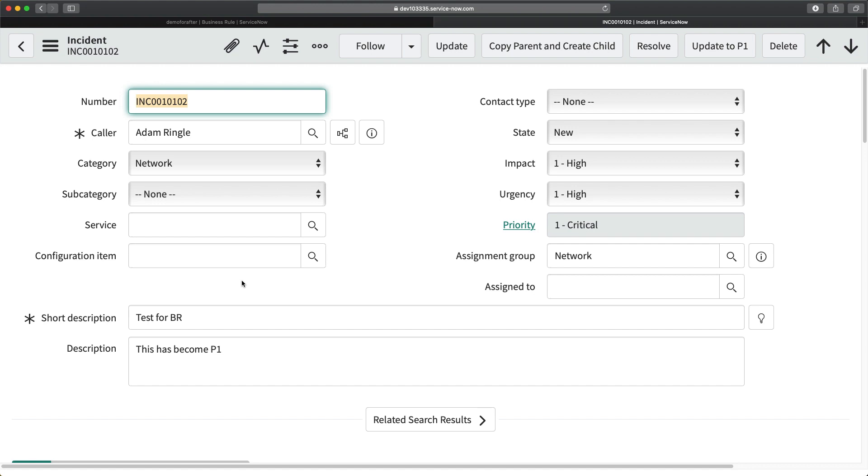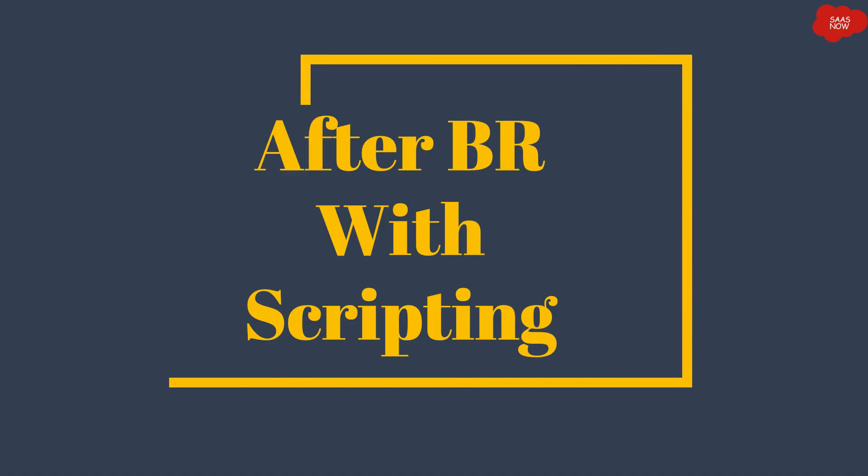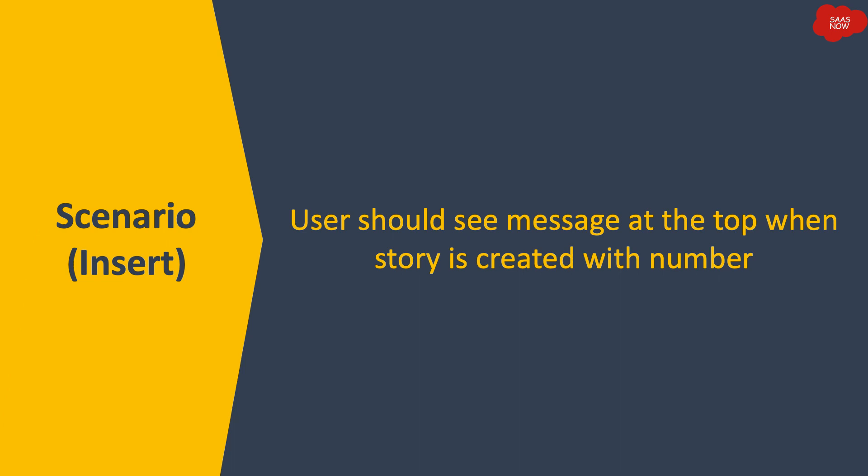Now let's create a few after business rules with scripting, in my personal developer instance. Starting with the first scenario: after insert, where users should see a message at the top when a story is created. This is similar to what we did earlier, but there is an additional requirement — the message must dynamically include the story number. With configuration alone you cannot make things dynamic, because the number must be populated for each newly created record. That is the key difference between configuration and scripting.